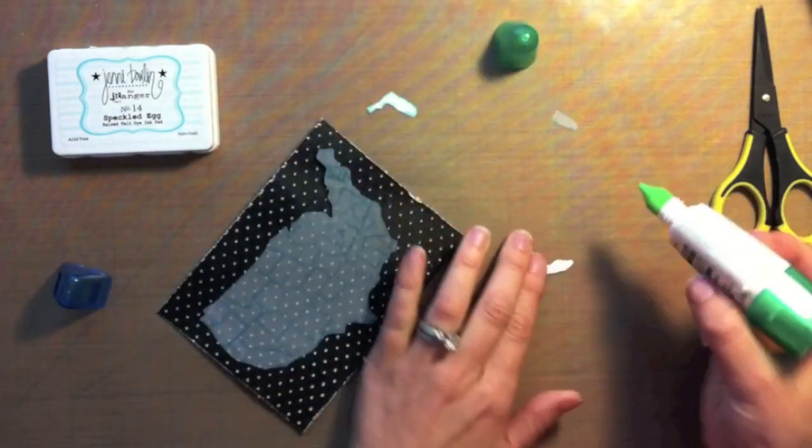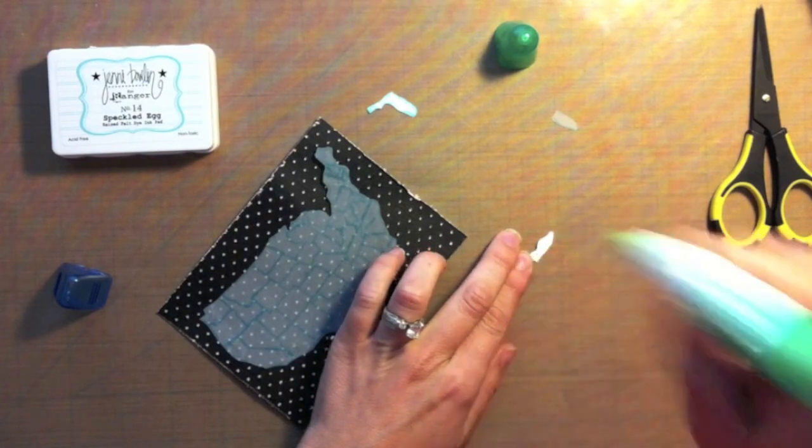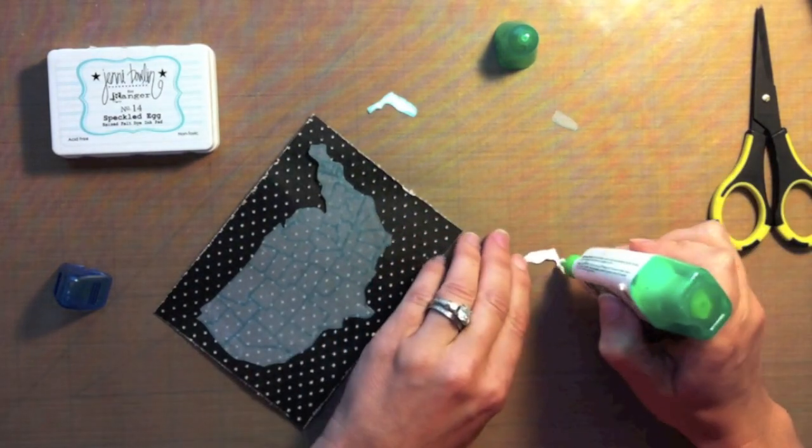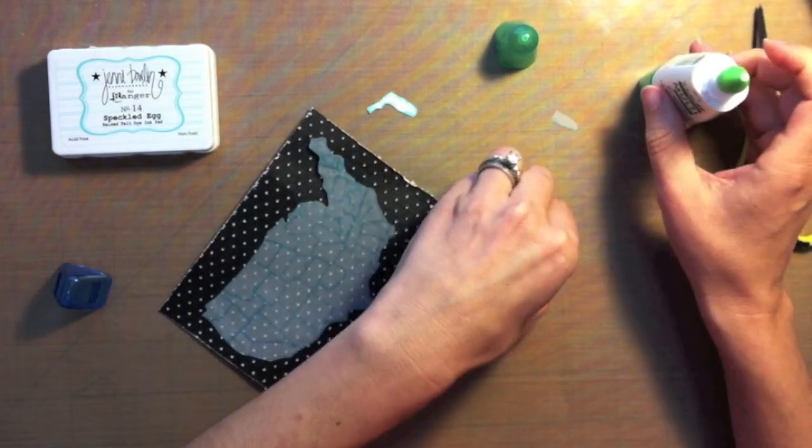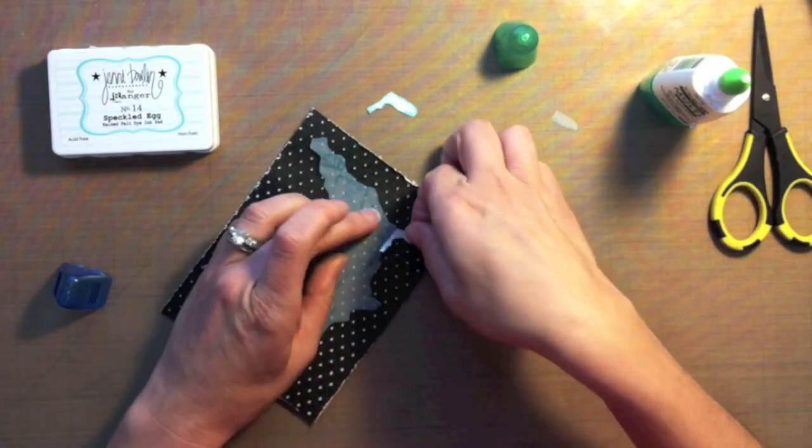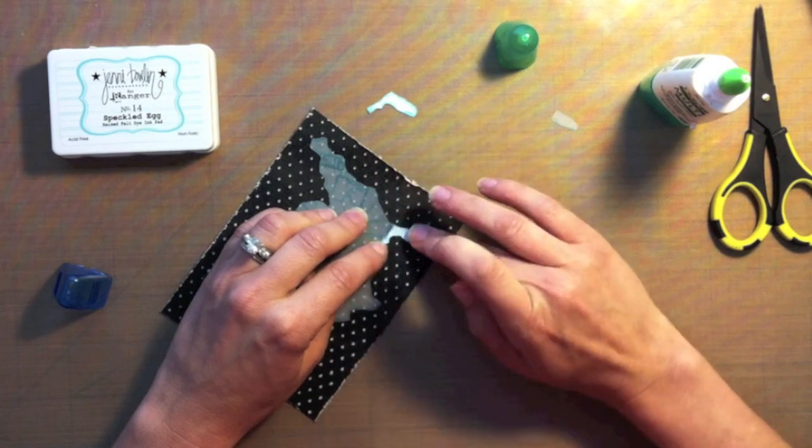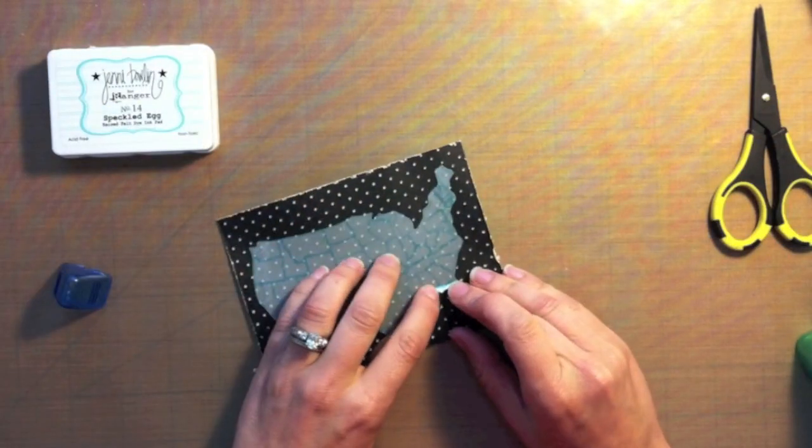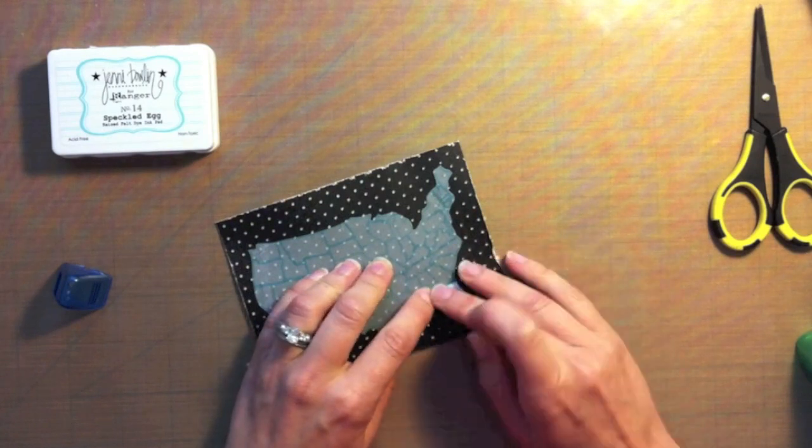I absolutely love this glue. I have several bottles of it. I don't ever want to be without it. And another thing is you do have a few seconds to kind of move your image around if you need to before it dries, so I like that too, just in case I'm off-center or something when I'm applying my image. Now I did decide that that Florida was a little too white for me.